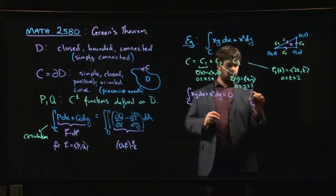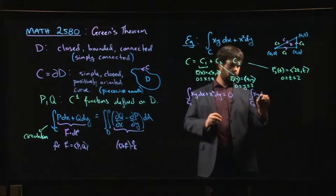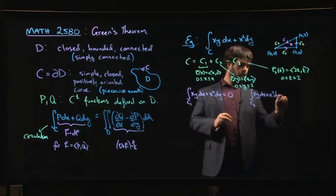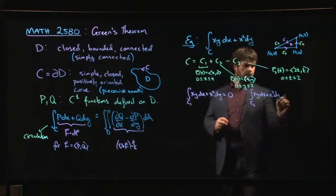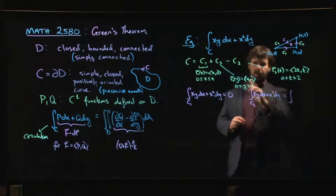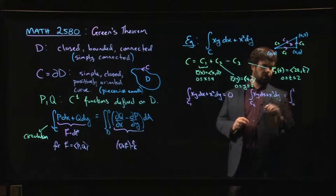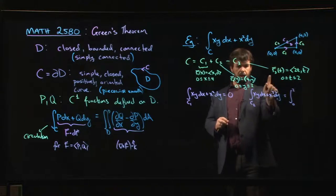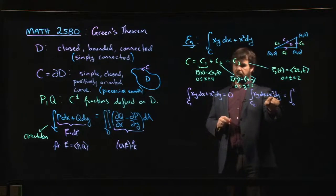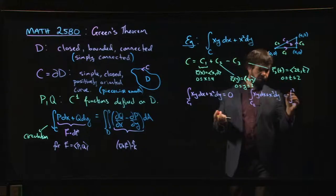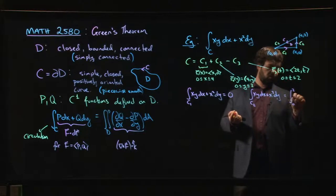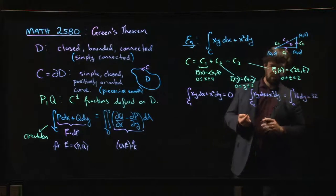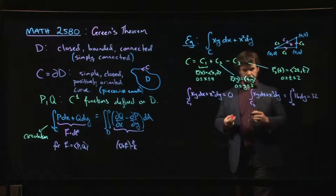What about c2? So along c2, we're using y as our parameter. y goes from 0 to 2. x is held constant, so dx is 0. And x is at the constant value of 4. So this just becomes the integral from 0 to 2 of 16 dy. So that's 32. That's not so bad.